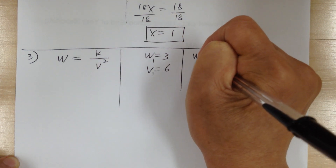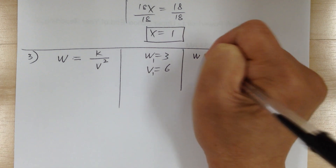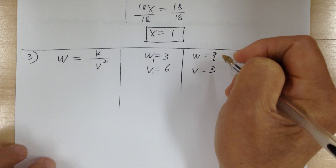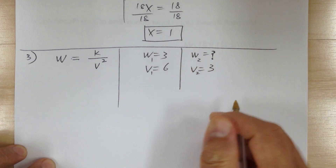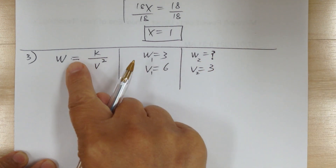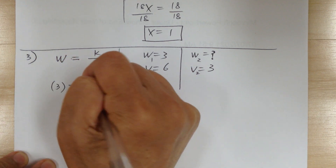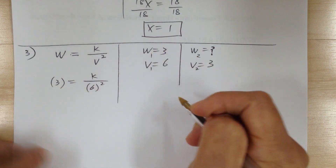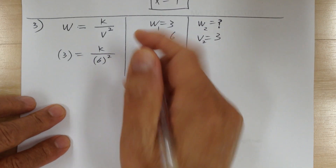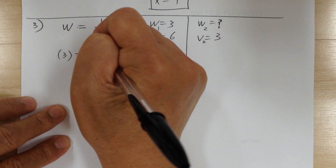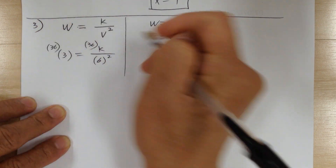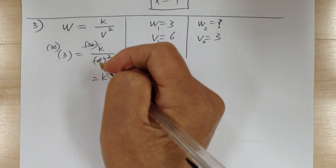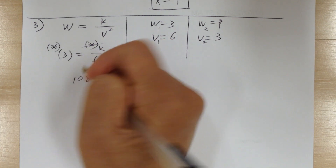Case 2: find w when v equals 3. Substitute into the equation to find k: 3 equals k over 6 squared. Since 6 squared is 36, multiply both sides by 36 so the denominator cancels out. So k equals 108.